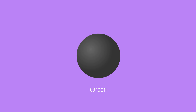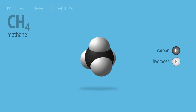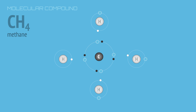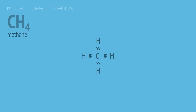A carbon atom has four valence electrons, and so four empty locations to complete the outer shell with eight electrons. As a result, it forms four covalent bonds. In a molecule of methane, these four bonds are formed as each hydrogen atom shares electrons with the central carbon atom. Each pair of shared electrons is a single covalent bond.